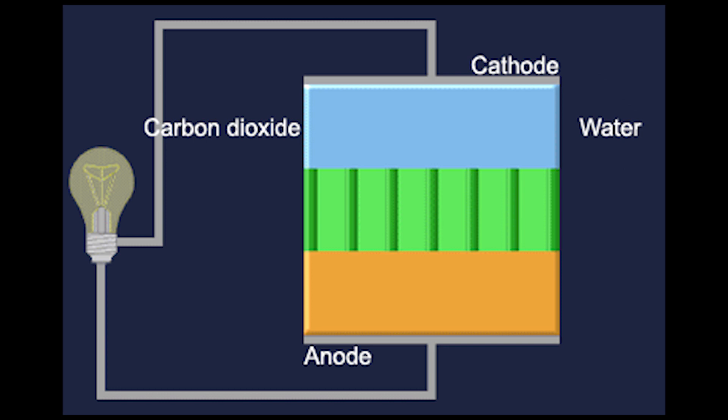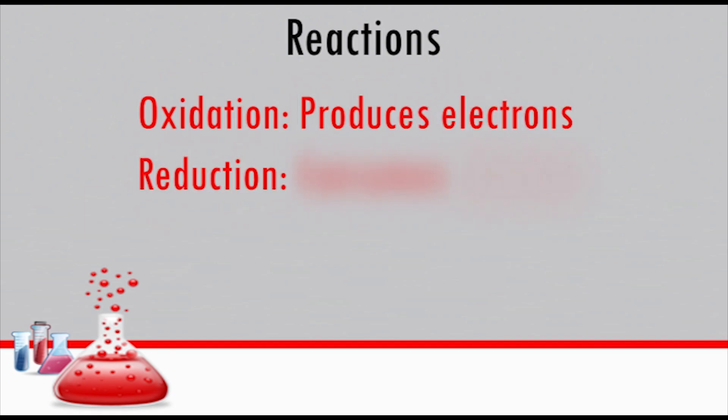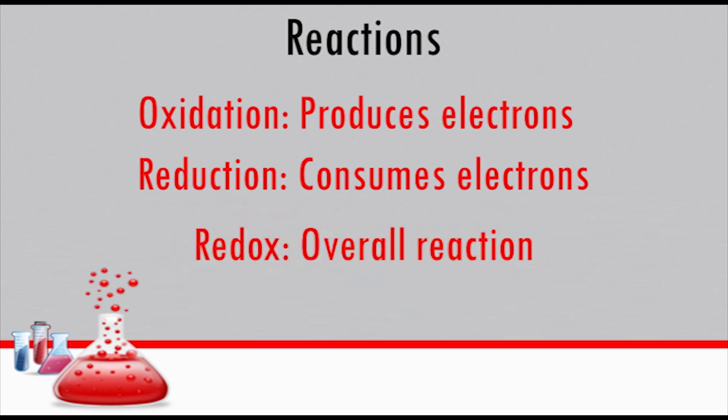Now, to understand the specific reaction equations occurring in the fuel cells, we must first understand oxidation and reduction reactions. Quite simply, an oxidation reaction produces electrons, while a reduction reaction consumes them. In an overall equation, a redox reaction, both must be present because electrons cannot exist alone in the environment.